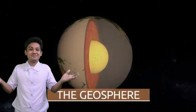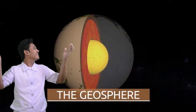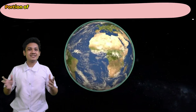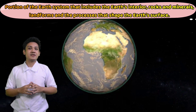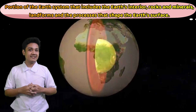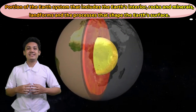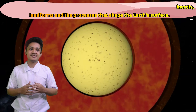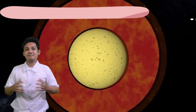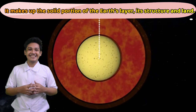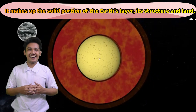The first is the geosphere. It is the portion of the Earth's system that includes the Earth's interior, rocks and minerals, landforms, and the processes that shape the Earth's surface. It makes up the solid portion of the Earth's layer, its structure and land.